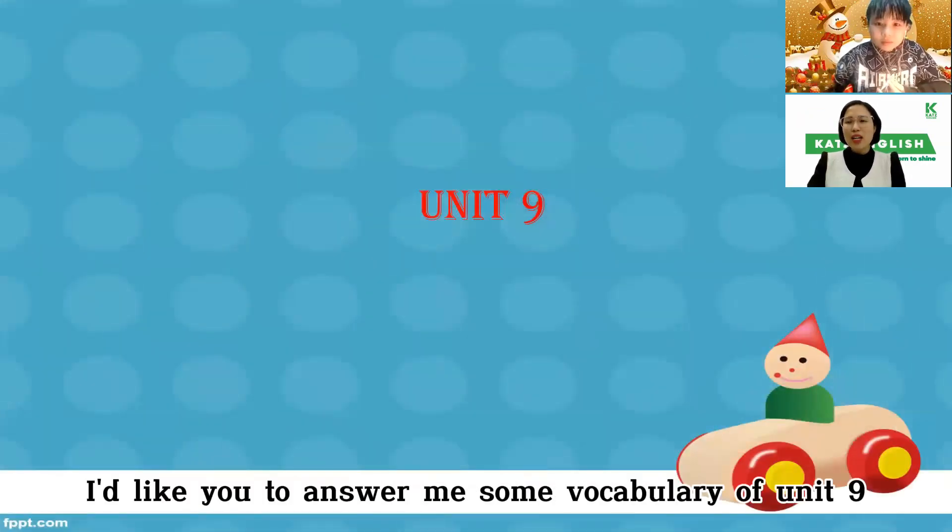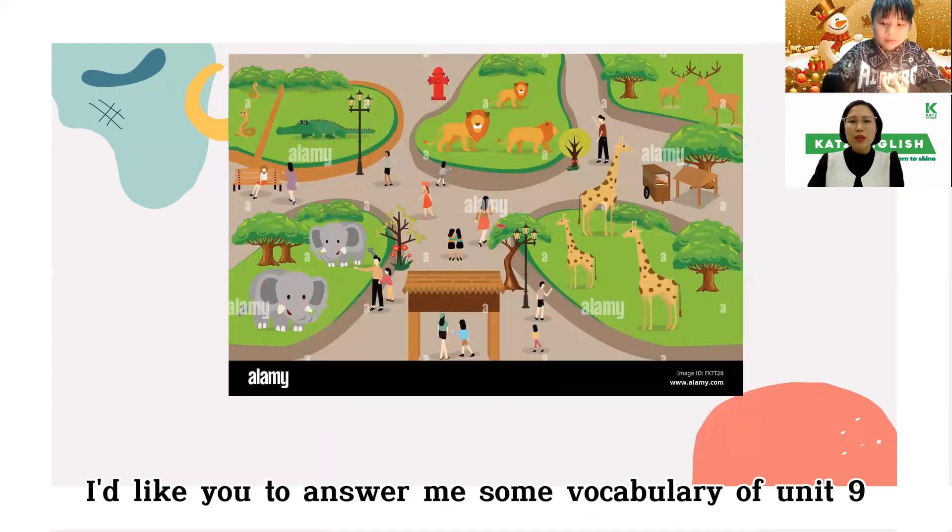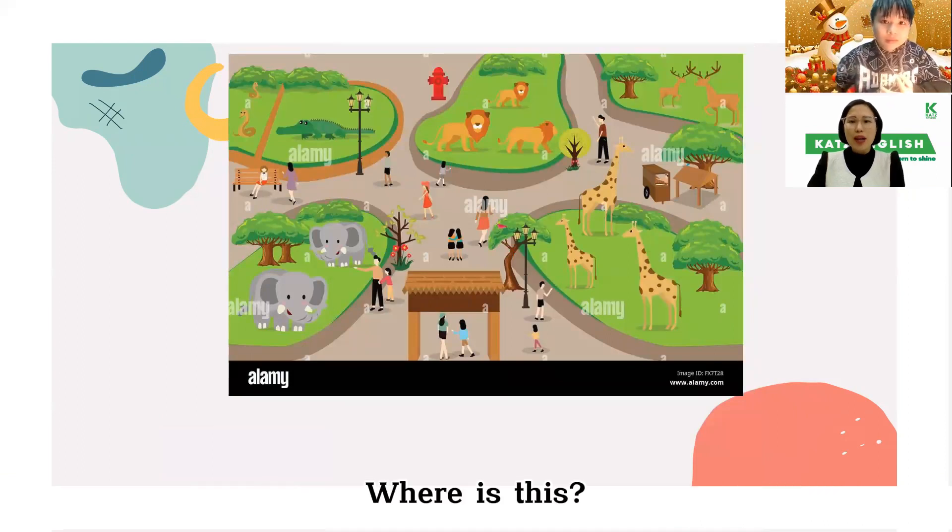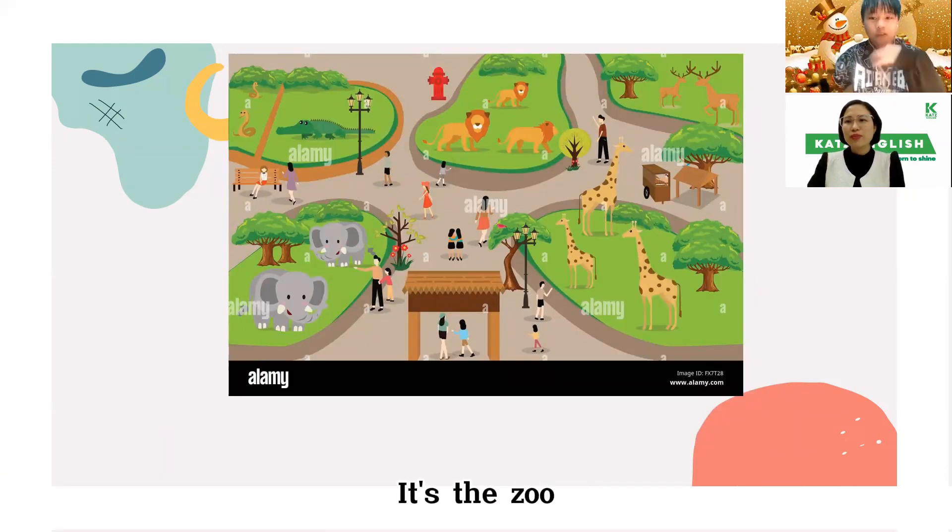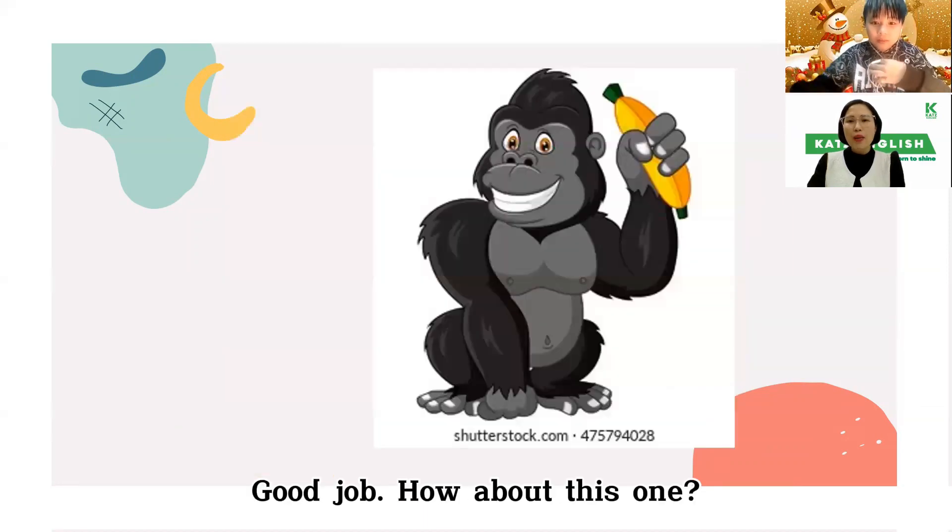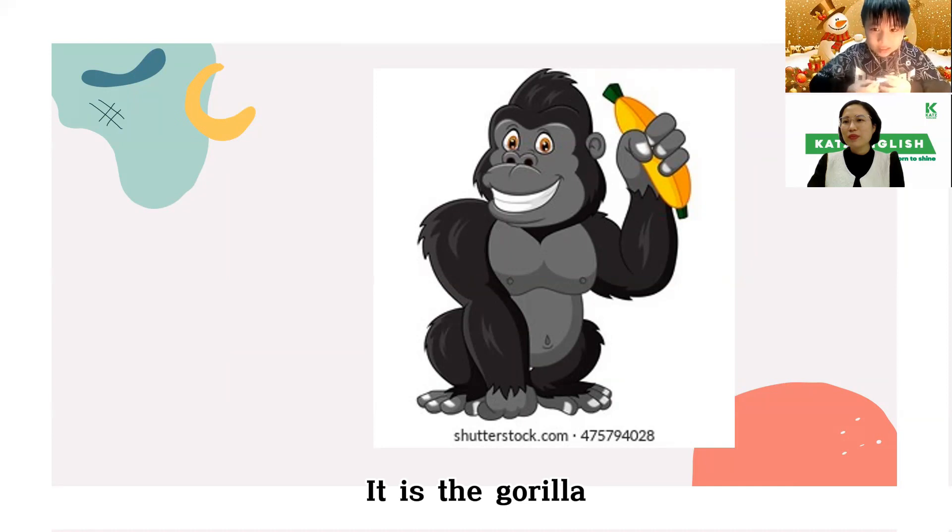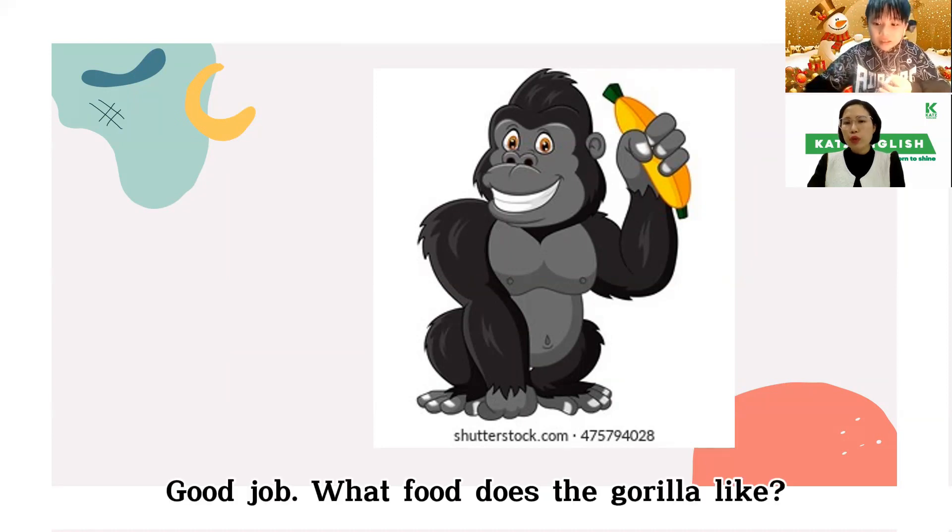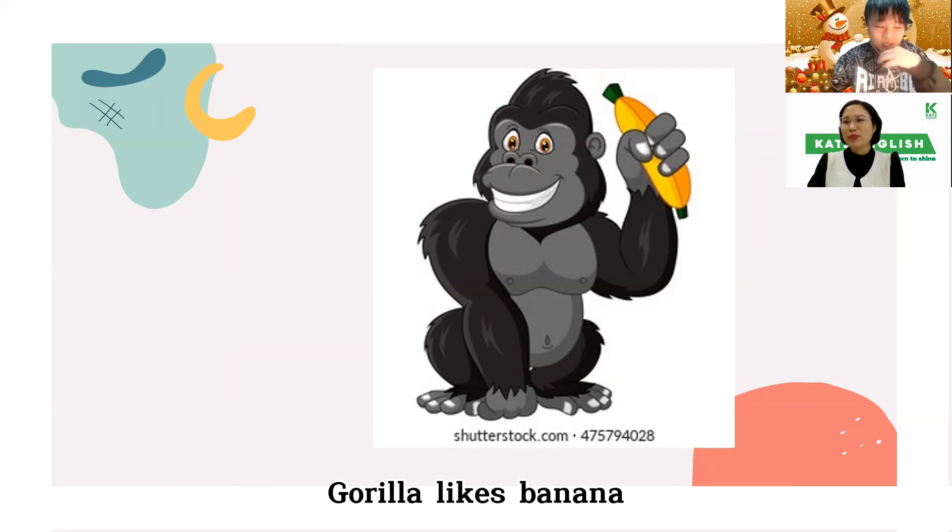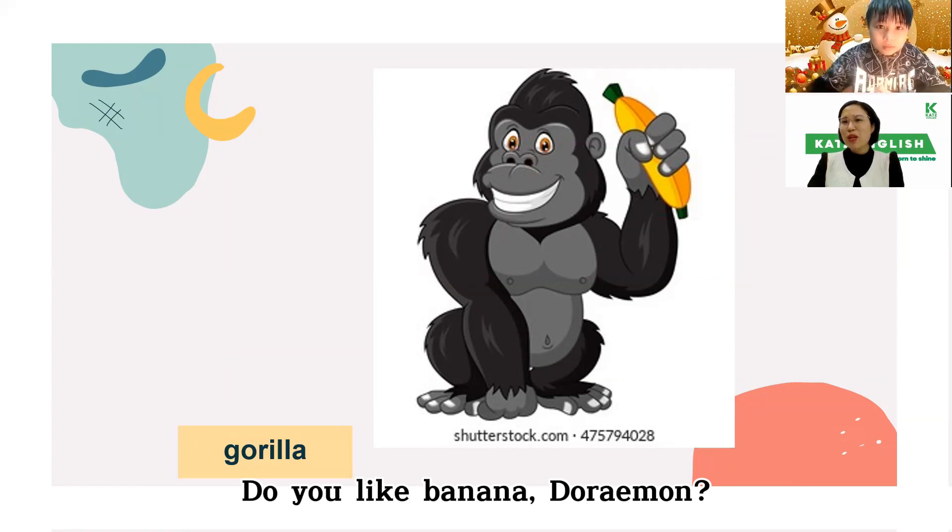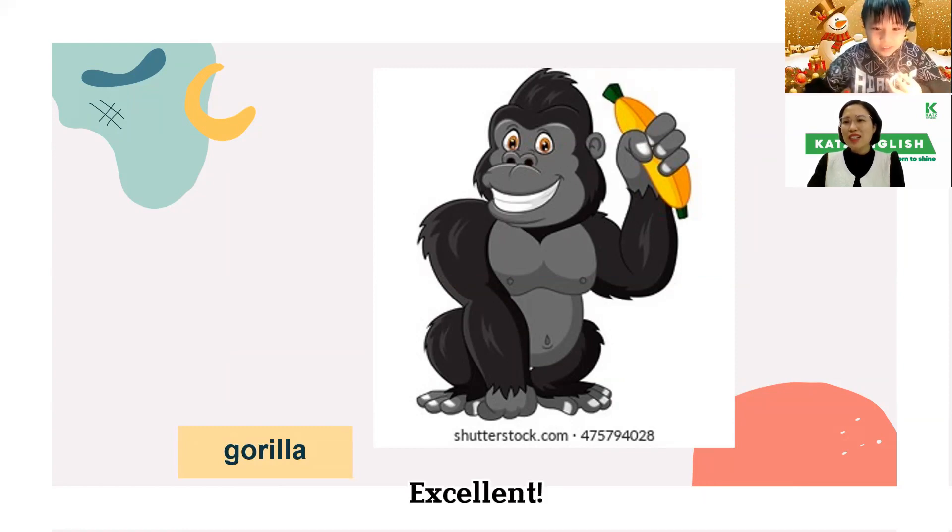Next one, I'd like you to answer me sample vocabulary of unit 9. Where is it? This is the zoo. Good job. And how about this one? What animal is it? It's a gorilla. Good job. And what food does the gorilla like? A gorilla like banana. Yes. Do you like banana, Doraemon? Yes, I do. Excellent.